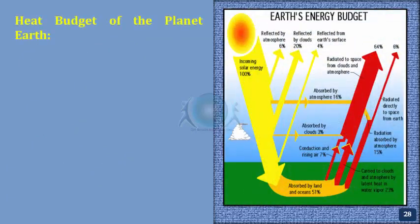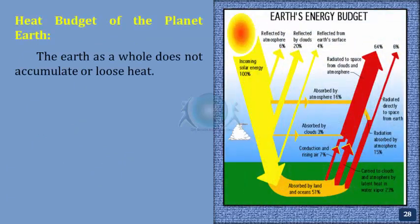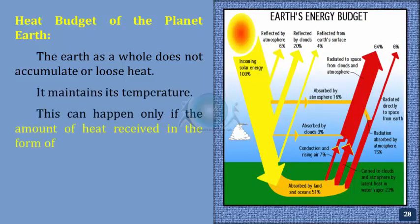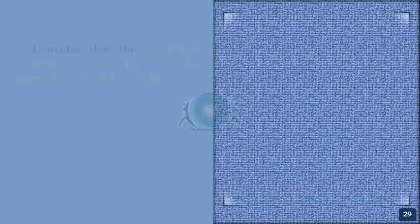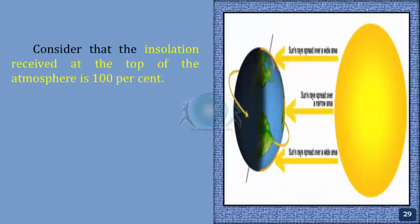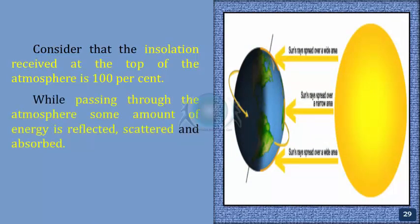Heat budget of the planet Earth. The Earth as a whole does not accumulate or lose heat — it maintains its temperature. This can happen only if the amount of heat received in the form of insolation equals the amount lost through terrestrial radiation. Consider that the insolation received at the top of the atmosphere is 100%. While passing through the atmosphere, some amount of energy is reflected, scattered, and absorbed — only the remaining part reaches the Earth's surface.